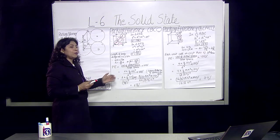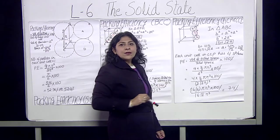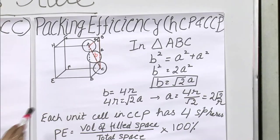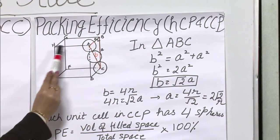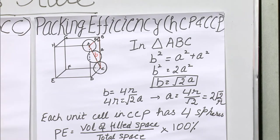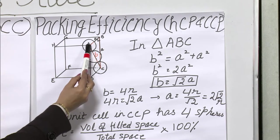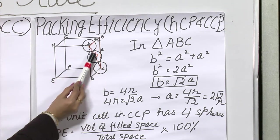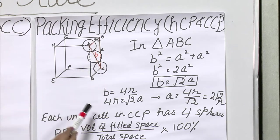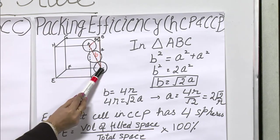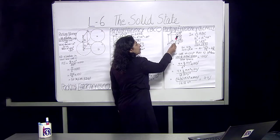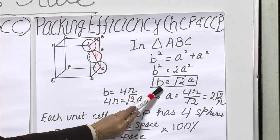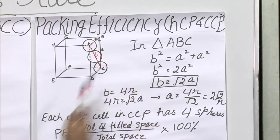This more efficiently packed structure is the face centered cubic (FCC) cell. In FCC there are atoms on all 6 faces, contributing 3 atoms, plus corner contributions from the simple cubic arrangement, giving a total of 4 atoms per unit cell. To find the geometry, let us take triangle ABC on one face. The face diagonal B is the hypotenuse since all angles are 90 degrees.